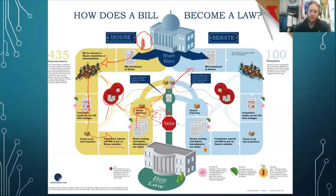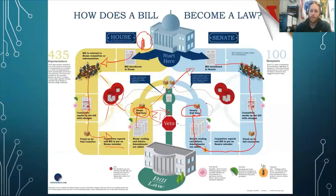Once the House likes the bill, it's sent over to the Senate, where the Senate goes through the same process. The Senate sends it to their own committee, they mark up the bill, it's voted on in committee, it goes on the calendar, they debate it, and then the Senate votes on it themselves.